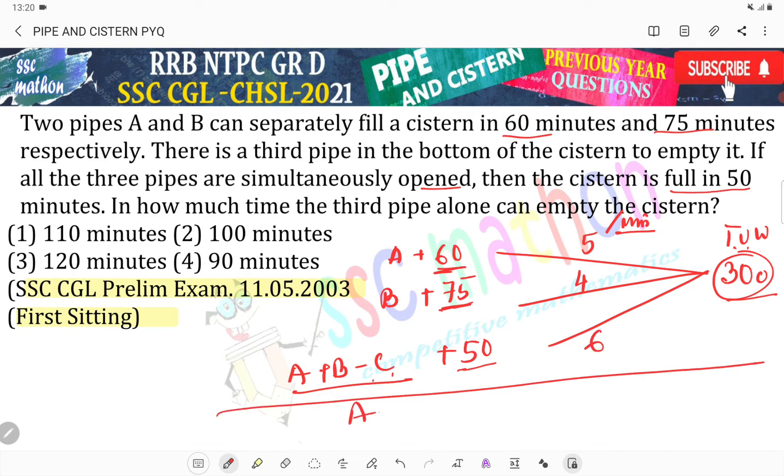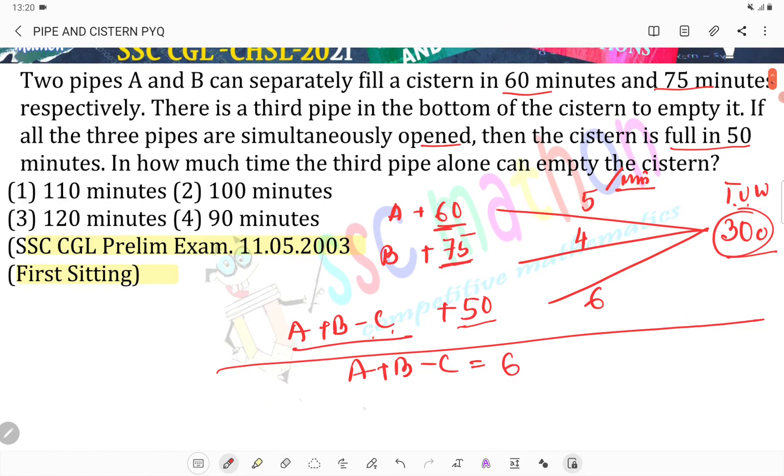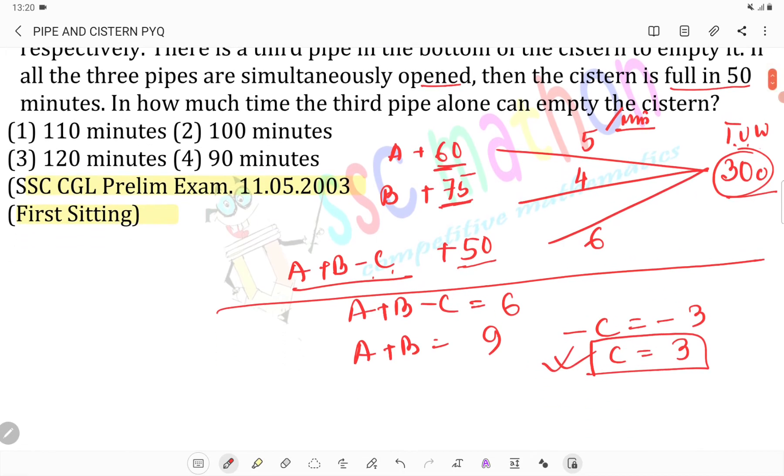Now A plus B minus C equals to 6. A plus B is 5 plus 4 equals 9, minus C equals 6. So C equals 3 units per minute.